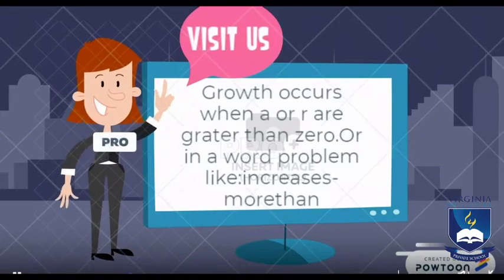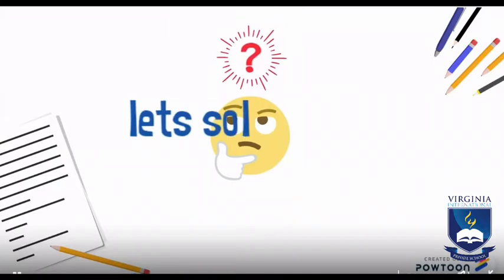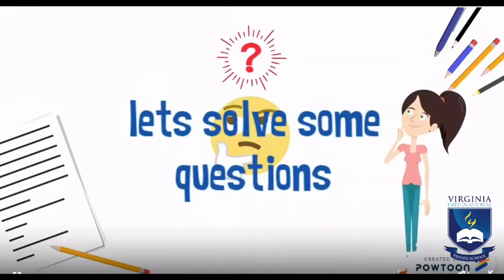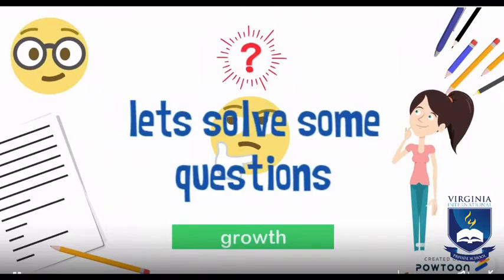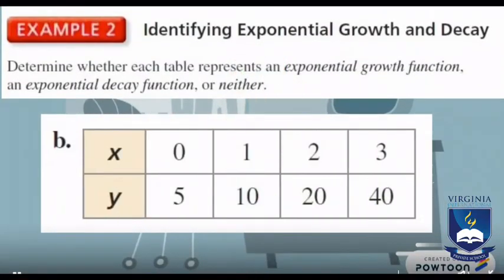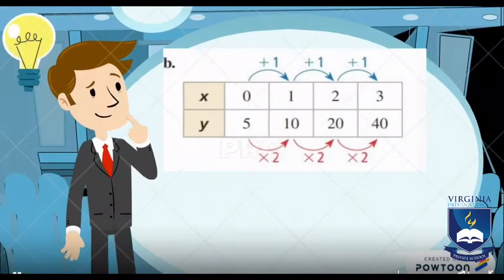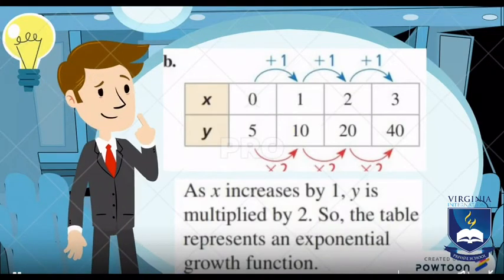Let's take some examples about the growth function. Identify exponential growth: determine whether each table represents an exponential growth function, an exponential decay function, or neither. Looking at x and y, we can see that the x and y values are increasing. The x values are increasing by adding one, like zero plus one equals one, and the y values are increasing by times two, like five times two equals ten. That leads us to growth because growth equals increase.